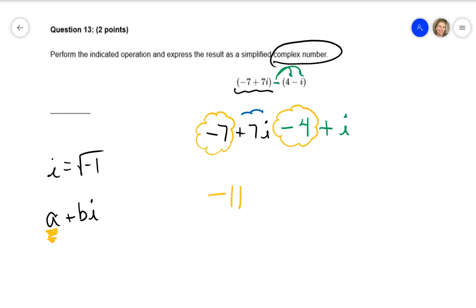And then you're going to combine the imaginary parts, the 7i and the invisible 1i, and that would be your bi. So that would be a positive 8i.